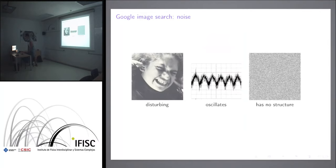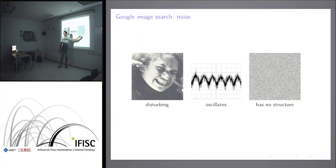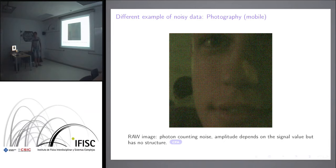When you look for noise in image search, you find images that give a good definition of what noise is: it's disturbing, and it randomly oscillates. The noise is not the sine wave itself — it's the oscillations over the sine signal, and it has no structure. Noise is inherent to all types of measurements. I will concentrate on noisy images, which is what I work with.